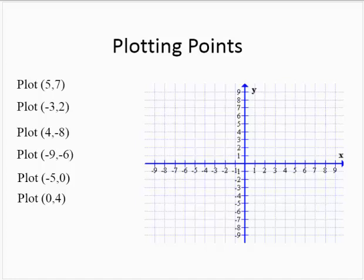Plotting points. Every ordered pair contains an x-coordinate and a y-coordinate. So when we're asked to plot the point (5, 7), that really says the point x equals 5, y equals 7. Our x-axis is the horizontal axis and our y-axis is the vertical axis, so the point where x equals 5 and y equals 7.